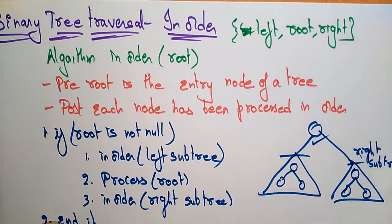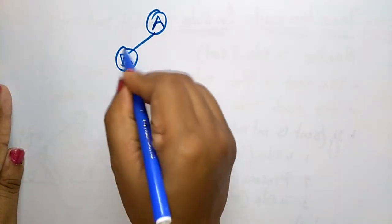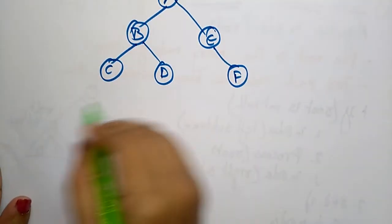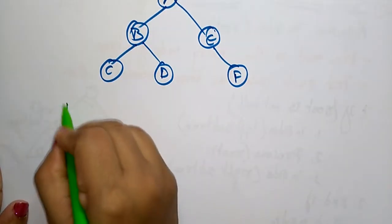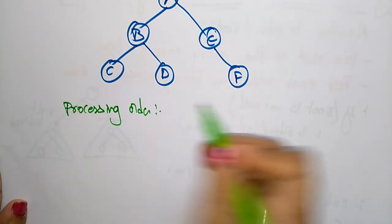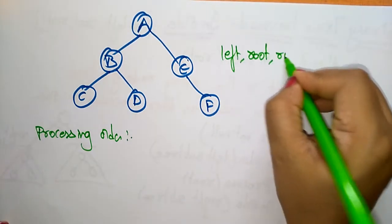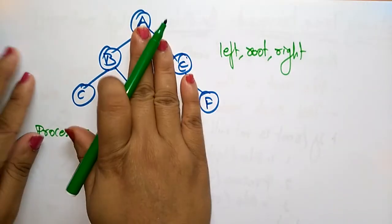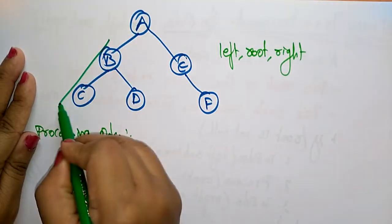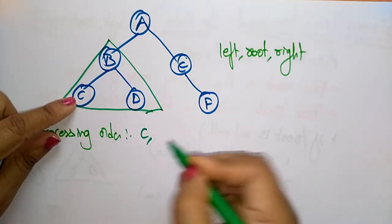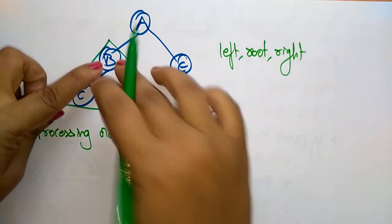Now let's see an example. We take the same tree: a, b, c, d, e, f. The in-order processing order — the condition is left, root, right. First come to the left side. There is a subtree here, so we apply in-order again on it. In this subtree, the left is c, the root is b, and the right is d. So we process c, b, d.